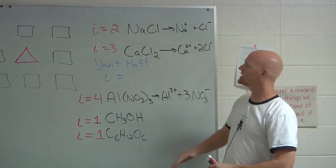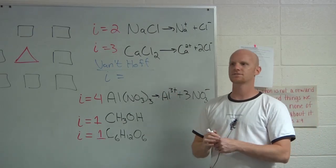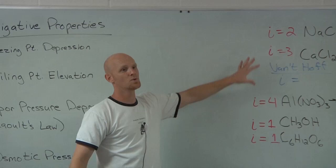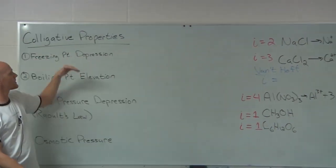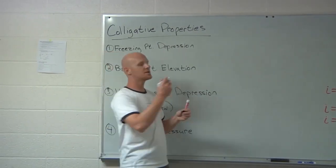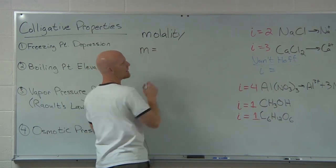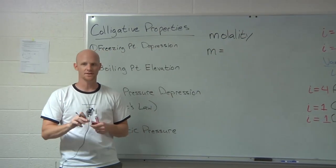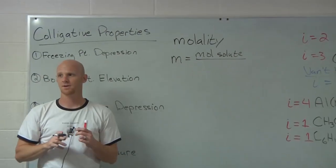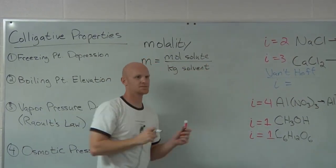A typical question you might get gives you equal concentrations of a bunch of different compounds and asks which one has the highest boiling point or the lowest freezing point. For colligative properties — in particular freezing point depression and boiling point elevation — we don't usually use concentrations measured in molarity. Instead we use molality, with the symbol lowercase m. Molality is defined as moles of solute per kilogram of solvent.